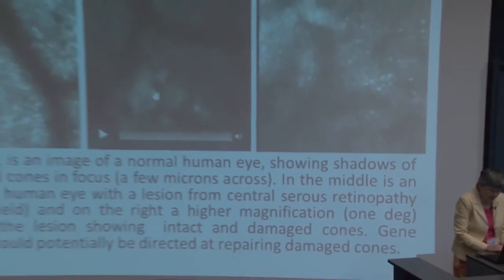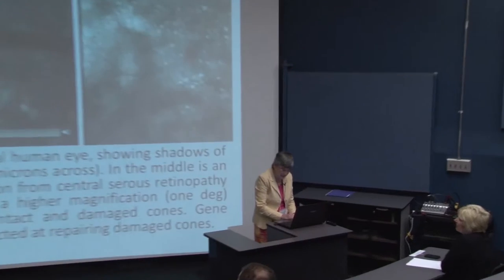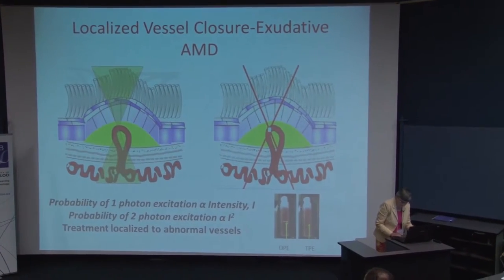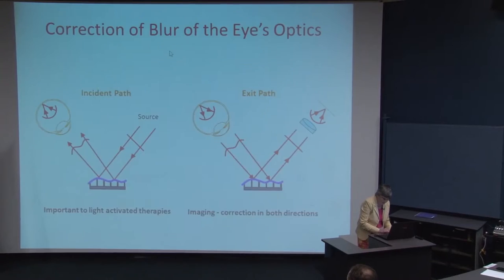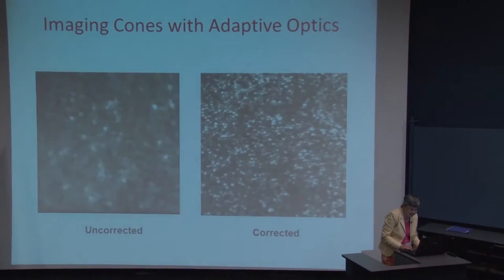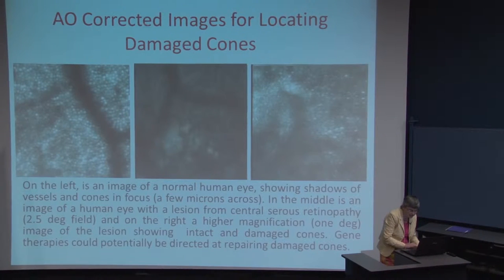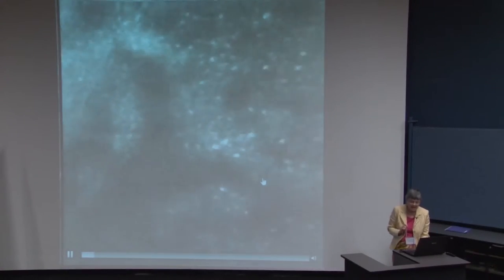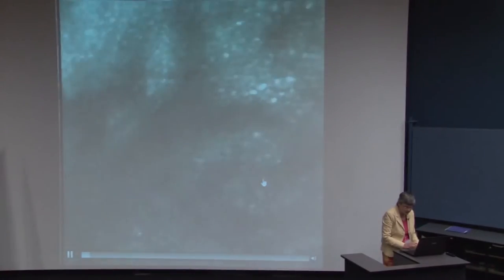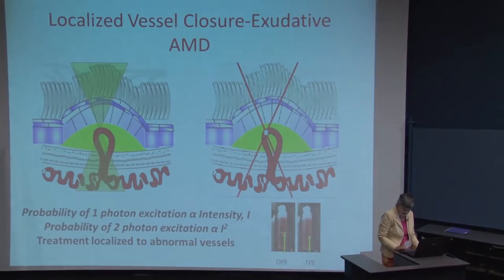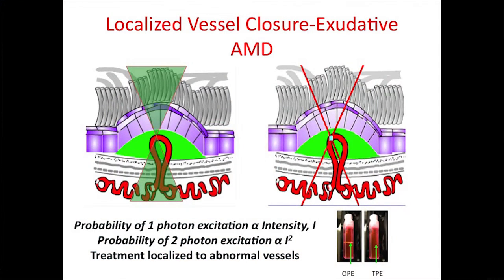We can take this to the next level by doing a video. You see normal cones on the left; here we have central serous retinopathy, which is a disease. In lower resolution you don't see much detail, but at higher resolution we can see the individual cones. What's very interesting is that we see some intact cones in the diseased areas of this retina. This is a very small field of view — those individual cones are only three microns across — and we can use that to determine when somebody is a good candidate for therapy, when they still have some intact cones in their diseased retina.